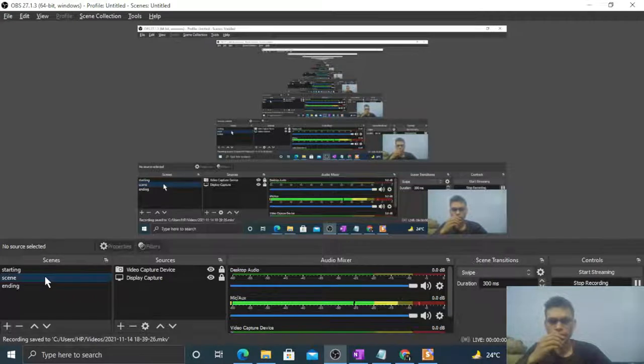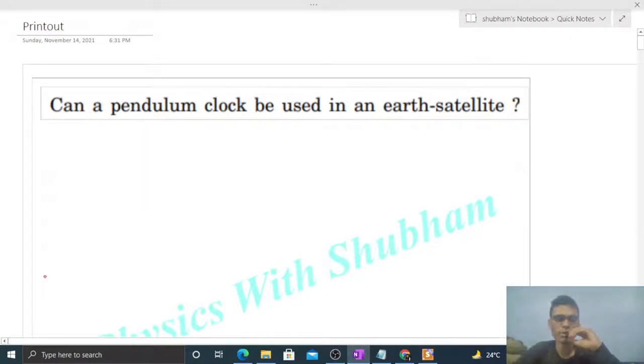Hi everyone, today let's discuss this interesting problem: Can a pendulum clock be used in an earth satellite? What is the time period of a pendulum? That is simply T = 2π√(l/g).